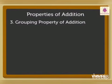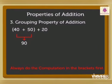Grouping property of addition. Look at the numbers 40, 50, and 20. Let us add the numbers by putting 2 numbers in a bracket: 40 plus 50 in bracket, plus 20. Remember, always do the computation in the brackets first. 40 plus 50 is equal to 90. Now, we add 90 plus 20 and get the sum 110.